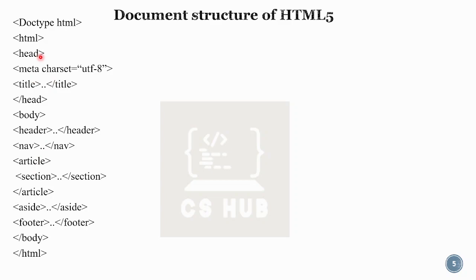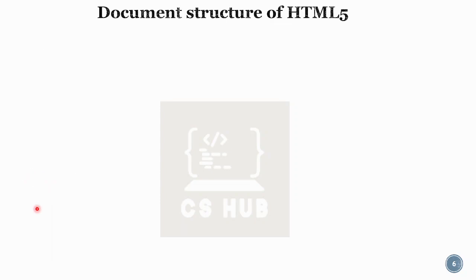Here is the general structure. In the heading section, we can use headings and paragraphs aligned with the page. In HTML5, there are some extra semantic options such as article, section, aside, and footer.